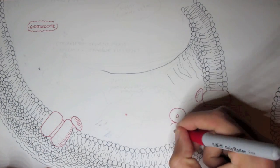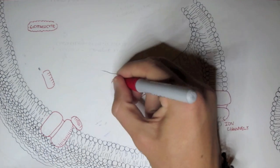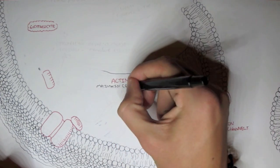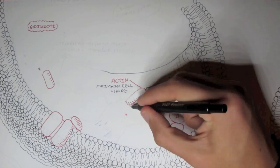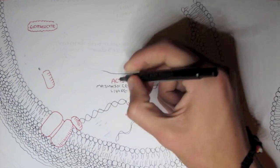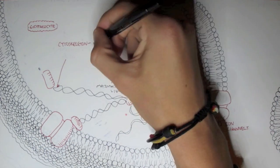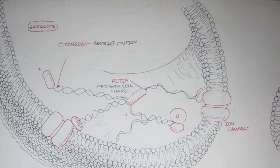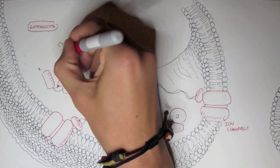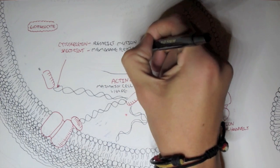So the inner leaflet of the membrane contains structures such as actin which is a protein and it helps in maintaining the cell shape. Also the inner leaflet and the cytoplasm contains things called cytoskeletons which restrict motion. And a particular cytoskeleton in erythrocytes are called spectrins which help in membrane flexibility.